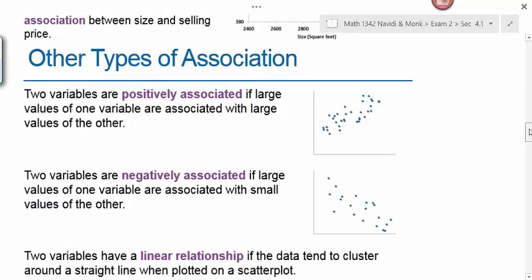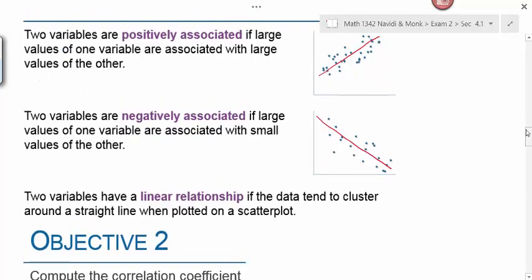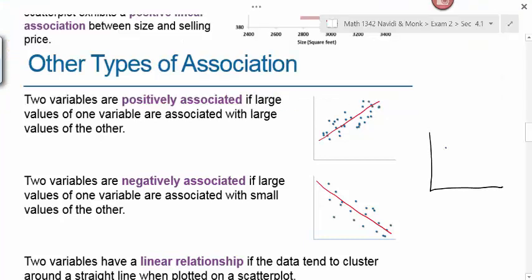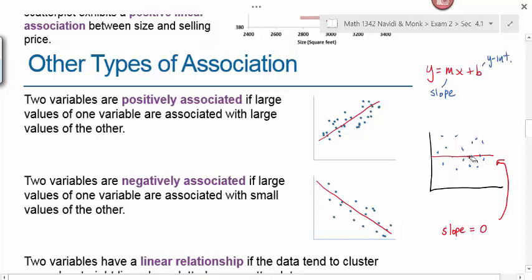There are other types of association. These would be positively associated with an increasing line, and negatively associated with a decreasing line. If you have a scatter plot where things are just kind of all random, there would be no correlation and the line your calculator would draw would be a horizontal line. What is the slope of a horizontal line? The slope is zero. The slope I'm referring to is y equals mx plus b, where m is the slope and b is the y-intercept.